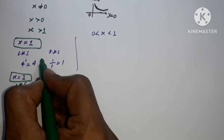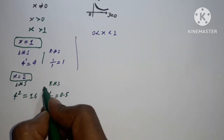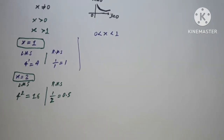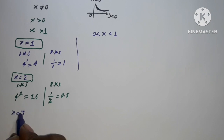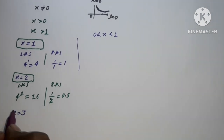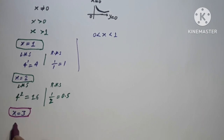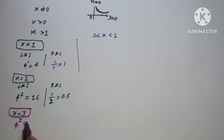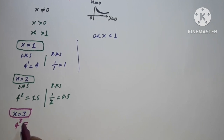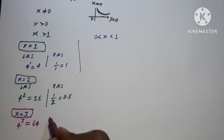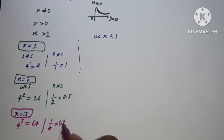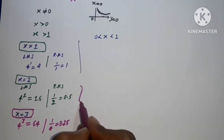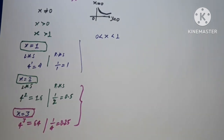Now we check x equal to 3. On the LHS side, 4 to the power 3 is 4 × 4 = 16, and 16 × 4 = 64. On the RHS side, 1 upon 3 gives approximately 0.25 — so this value does not match. For x greater than 1, we are not getting a solution.